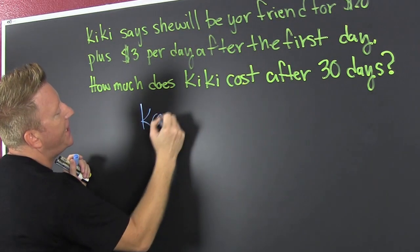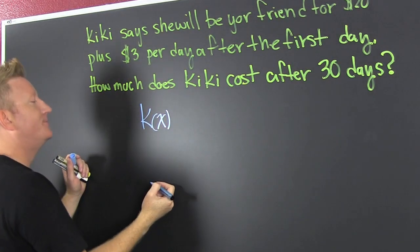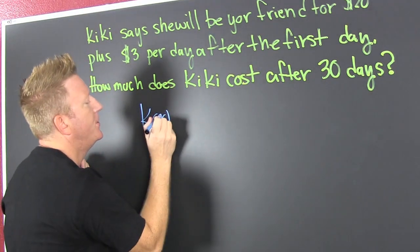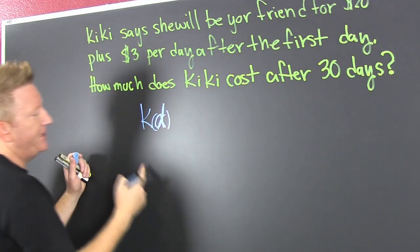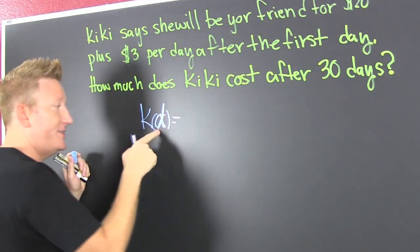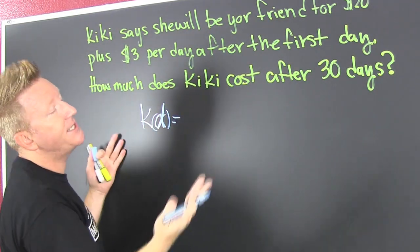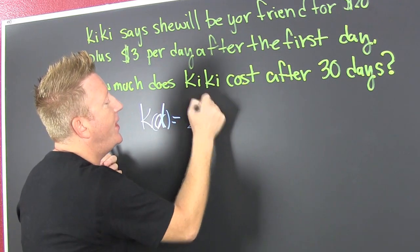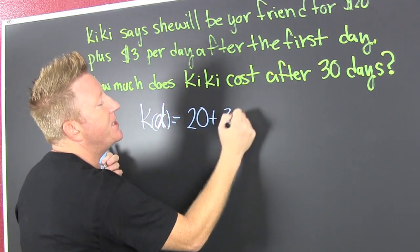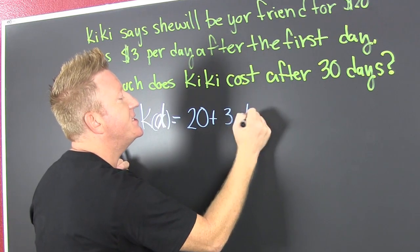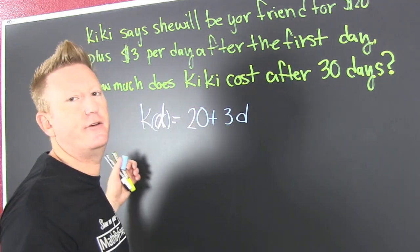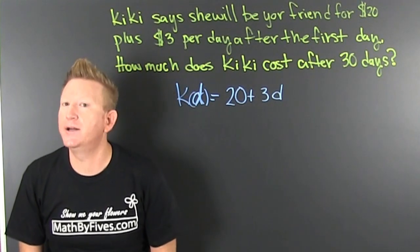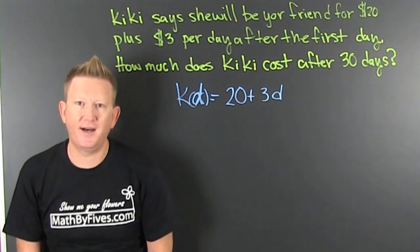We'll call it K of D — D for days. What's it cost? It's the fixed cost, you can't get out of that. 20 bucks to be a friend, and then it's gonna be three dollars for every additional day that Kiki is your friend. We've built our linear model for Kiki's cost.